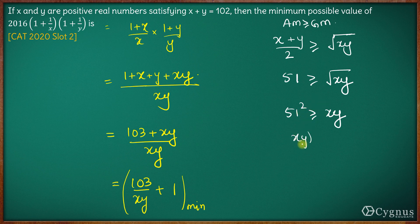So xy is always less than or equal to 51 squared. Therefore, the maximum value of xy is 51 squared. To minimize our expression, we maximize xy, and the maximum value of xy is 51 squared.